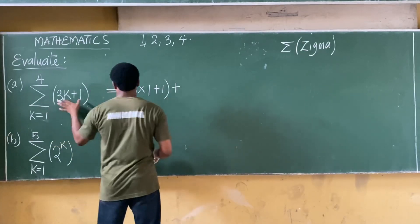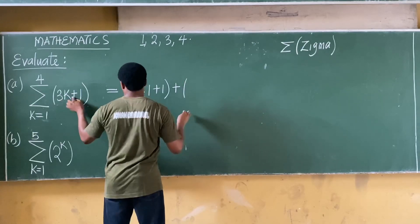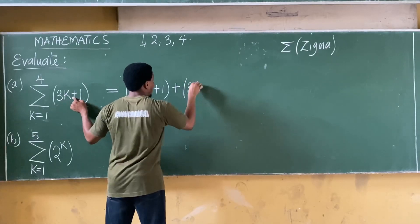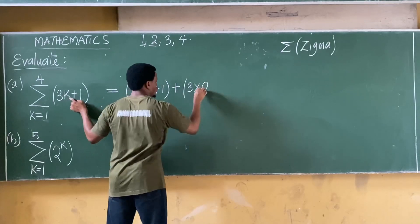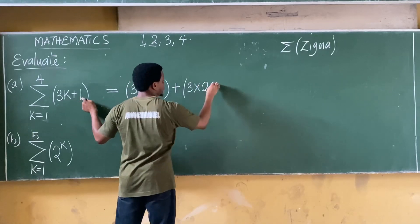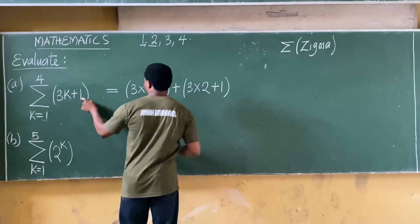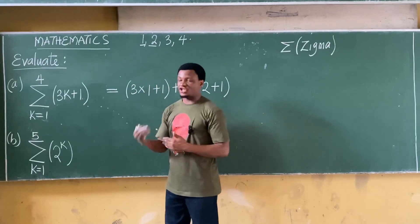That's my first term. Remember you're doing summation sigma, so it becomes plus I'll repeat the same term. That becomes 3k which becomes three times, I'll take k now as my second term which is two, then plus one.